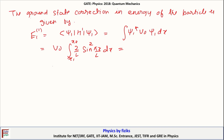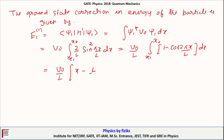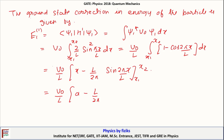We can further write this as V₀/L times the integral from X1 to X2 of (1 − cos(2πx/L)) dx. This integral equals V₀/L times [x − (L/2π) sin(2πx/L)] evaluated from X1 to X2, which can be further written as V₀/L times { A − (L/2π)[sin(2π(L+A)/2L) − sin(2π(L−A)/2L)] }.